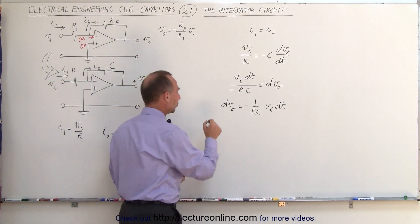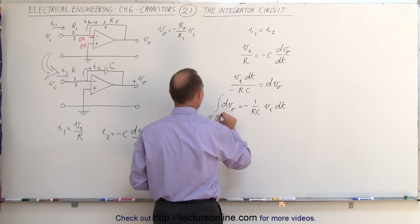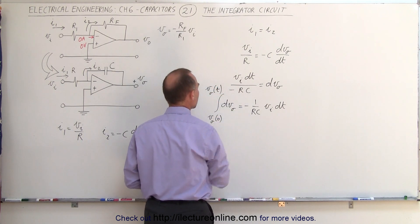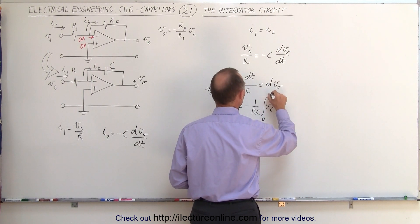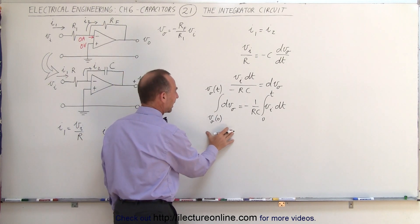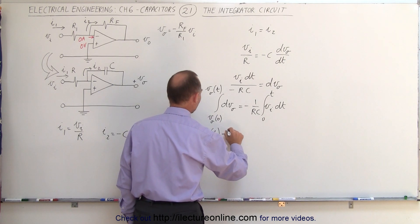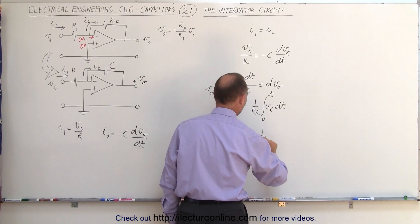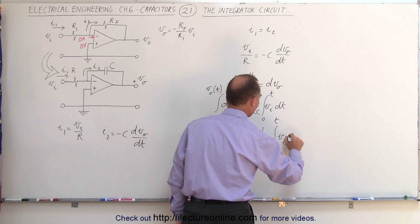Now we can integrate both sides of the equation. We integrate the left side from V_out at time equals 0 to V_out at time equals T, and we integrate the right side from 0 to T. On the left side we get V_out(T) minus V_out(0), which equals minus 1 over RC times the integral from 0 to T of the input voltage times dt.